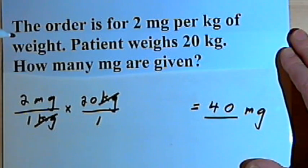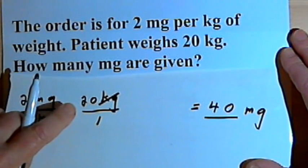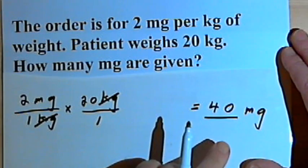So the basic approach is going to be: take your order, multiply it by the patient's weight, and that will give you your answer.